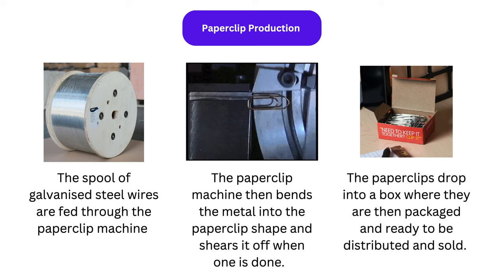At the paperclip factory, a worker loads a spool of wire into the machine and feeds one strand into it. The machine pulls the wire continuously; a wheel mechanism keeps working and the machine bends the wire into the paperclip shape with three bends. A blade then cuts off the finished paperclip, which drops into a box to be packaged and sold. There is a very good YouTube video on how paperclips are made — a link will be in the description — as describing the mechanical movements in words is difficult.